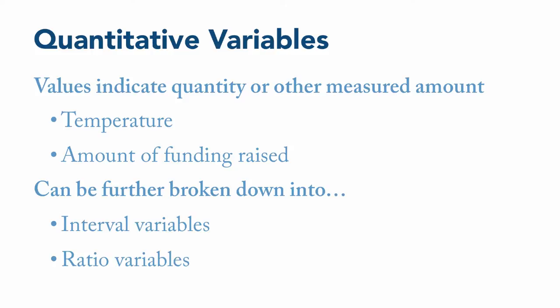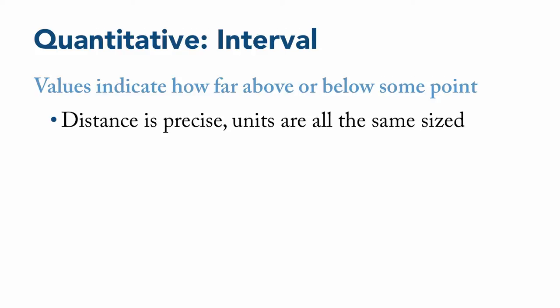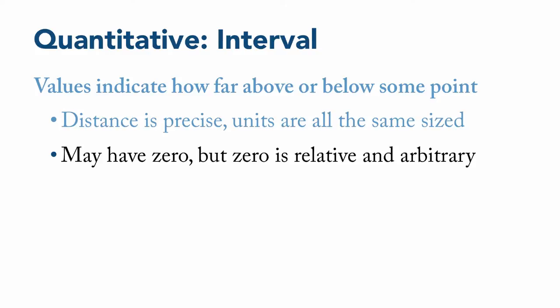Interval variables are ones where the values indicate how far a person's score is above or below some point. In every case, the distance between scores is precise, and the measurement units are all the same size. An interval variable may or may not include zero as a value, but if it does, that zero is relative and arbitrary. So an interval variable may not have a zero, as with IQ, where it's simply not possible to get a score of zero. Or an interval variable may have a zero, but maybe you can go right past zero into the negative numbers, as with temperature in Fahrenheit or Celsius. Because of this, it isn't possible to say that one value is twice as much as another. For example, you can't say that 80 degrees Fahrenheit is twice as hot as 40 degrees Fahrenheit. It's exactly 40 degrees hotter, but it's not twice as hot.